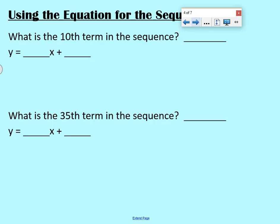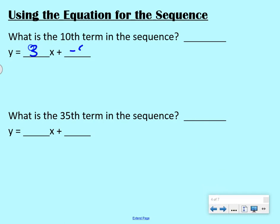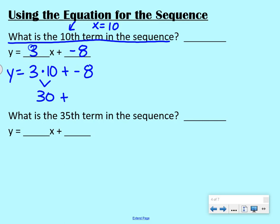So we're going to use the equation for the sequence. Our equation was y equals 3x plus negative 8. We want to use that to find the 10th term in the sequence. Now, if we want the 10th term, our term number was x. So we're saying x is equal to 10. What is y going to be? So we say y equals 3 times x, so times 10, plus negative 8. Well, what's 3 times 10? 30, plus negative 8. Well, that's really 30 minus 8, which would give us 22. So the 10th term in the sequence would be 22.